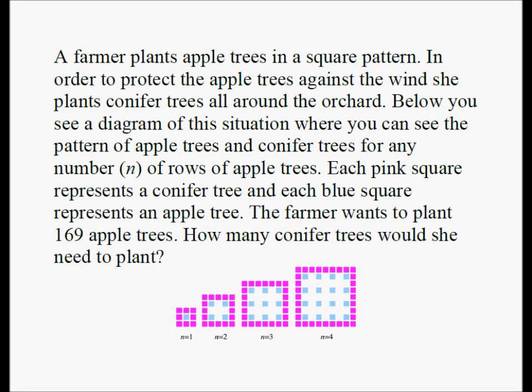A farmer plants apple trees in a square pattern. In order to protect the apple trees against the wind, she plants conifer trees all around the orchard. The diagram shows the pattern of apple trees and conifer trees for any number n of rows of apple trees. Each pink square represents a conifer tree and each blue square represents an apple tree. The farmer wants to plant 169 apple trees — how many conifer trees would she need to plant?